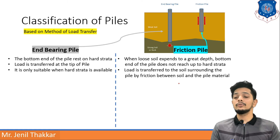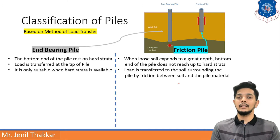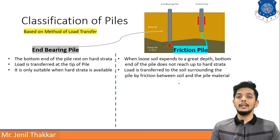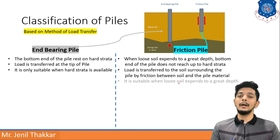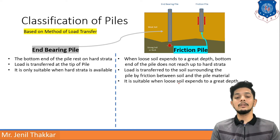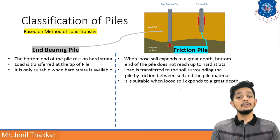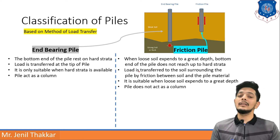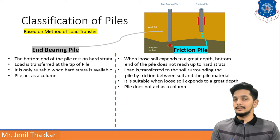End bearing pile is only suitable when hard strata is available, whereas for friction pile you don't need hard strata — you need loose soil. End bearing pile acts as a column, whereas a friction pile does not act as a column.